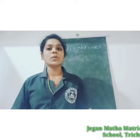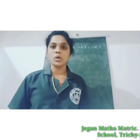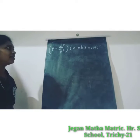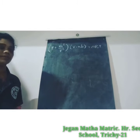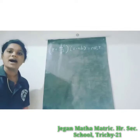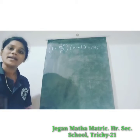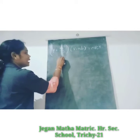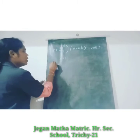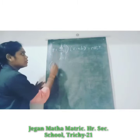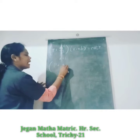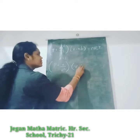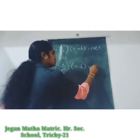The Van der Waals equation for N moles is: P plus AN² divided by V² into V minus NB equals NRT. For one mole, N equals 1, so the equation becomes: P plus A by V² into V minus B equals RT.